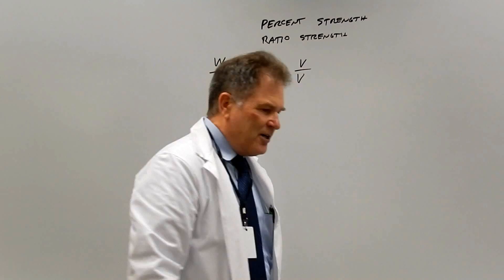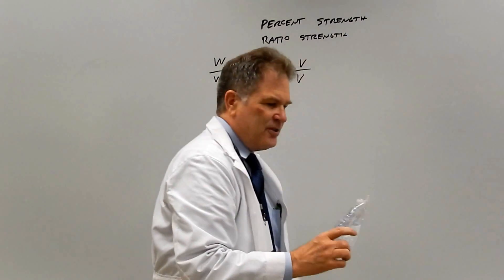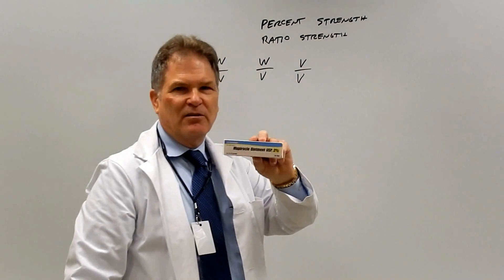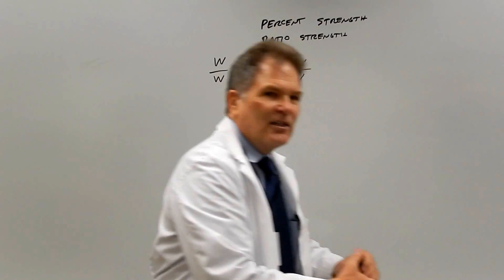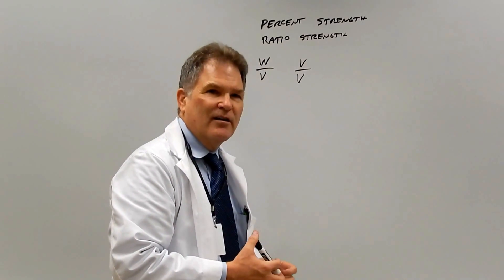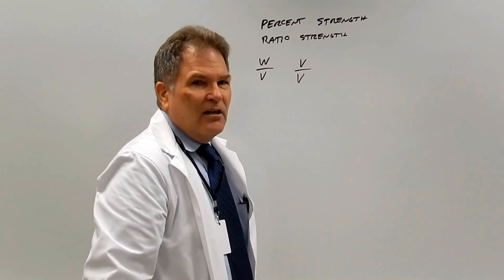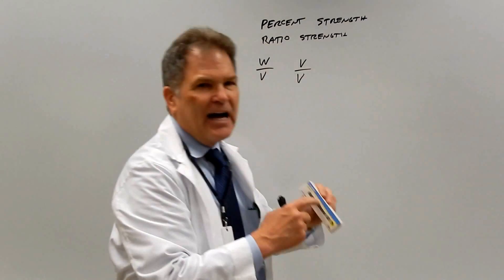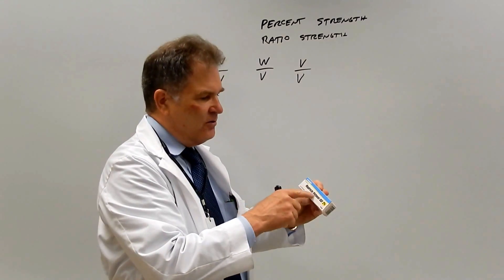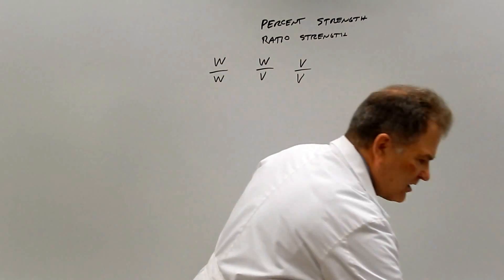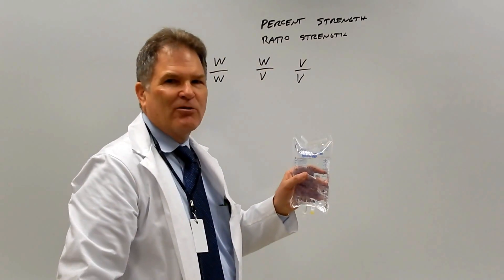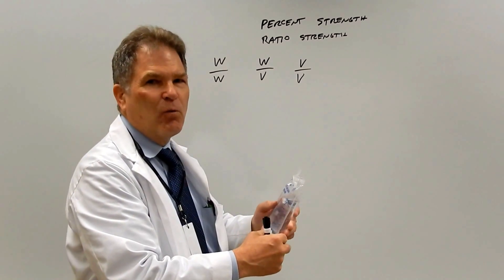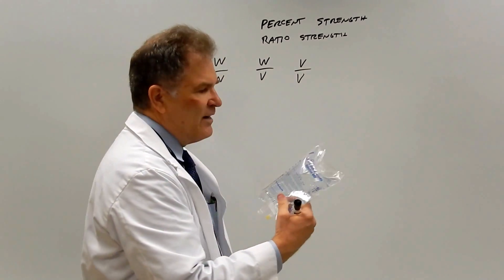Many drugs are expressed as a percent strength, such as 0.9% sodium chloride or 2% mupirocin. When you have a mixture of two things, it can be weight-weight, where you weigh out the active ingredient and the base, or weight-volume, where you weigh out the active ingredient like sodium chloride and measure the volume of water.